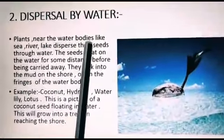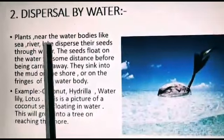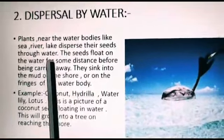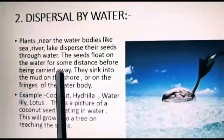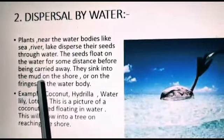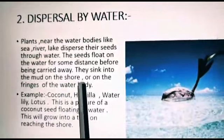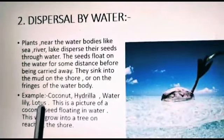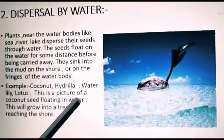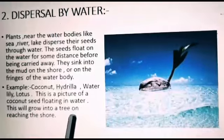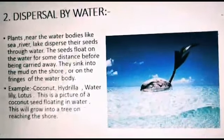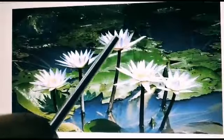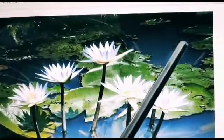Now we will discuss dispersion by water. Plants near water bodies like sea, river, and lake disperse their seeds through water. The seeds float on the water for some distance before being carried away. They sink into the mud on the shore or on the fringes of the water body. For example, coconut, hydrilla, water lily, lotus. This is a picture of a coconut seed floating in water, which will grow into a tree on reaching the shore. This is a picture of water lily seeds which will be dispersed through water.